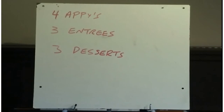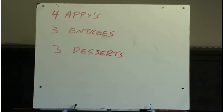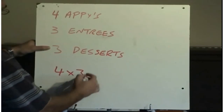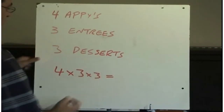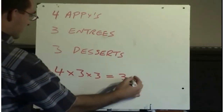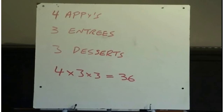Say you're at a restaurant with a special where you choose one appetizer, one entree, and one dessert. There are four appetizers, three entrees, and three desserts. Using the fundamental counting principle, four times three is twelve, and twelve times three is thirty-six. So there can be thirty-six different combinations of appetizers, entrees, and desserts.